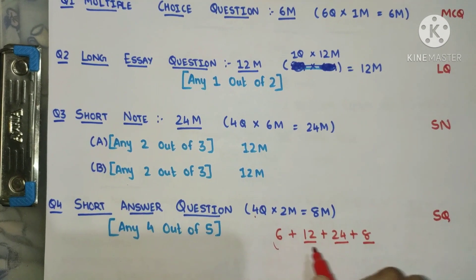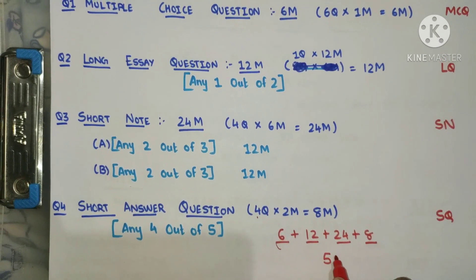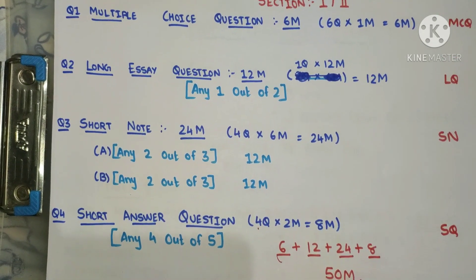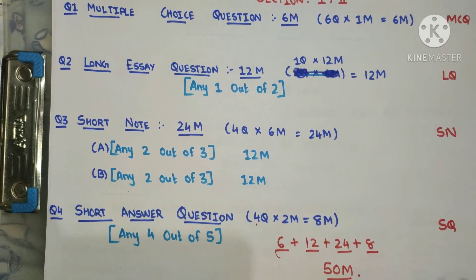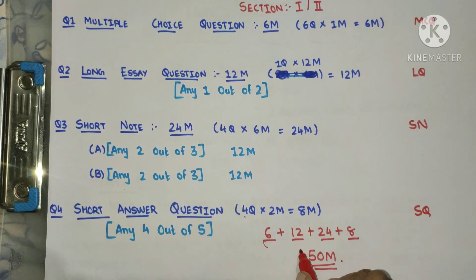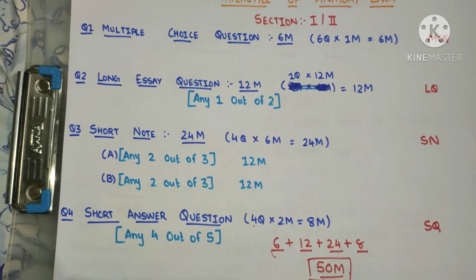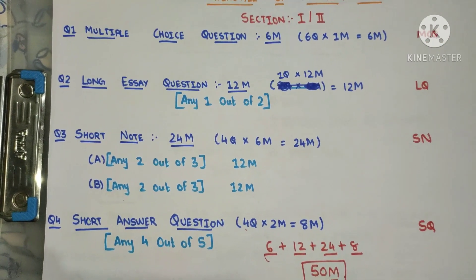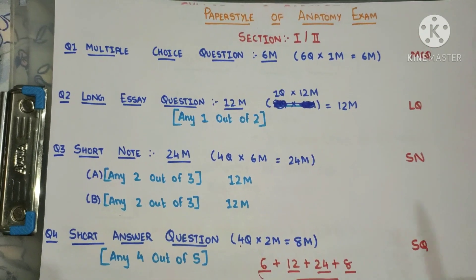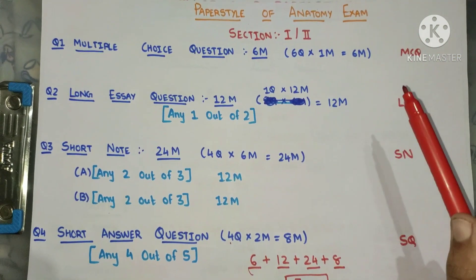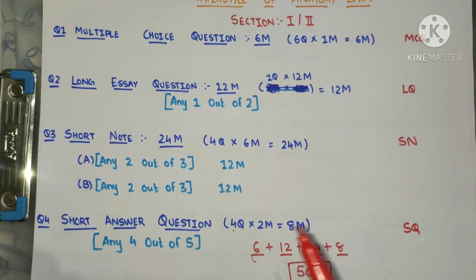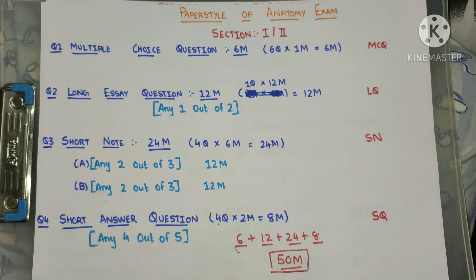Each section will be of 50 marks. There will be two papers — paper one and paper two — and in each paper there will be two sections, section one and section two, each of 50 marks. The paper style remains the same in each section. In the marks distribution: MCQ for multiple choice question, LQ for long essay question, SN for short note, and SQ for short answer question. You can take a screenshot here.